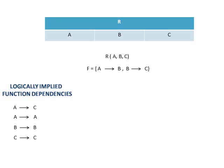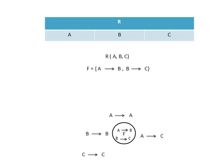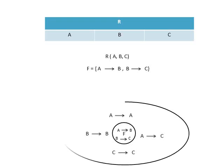This list can get really big if you have 10, 20, or 100 attributes. From a set theory perspective, we have a set F which is a set of dependencies — A determines B and B determines C. Then we have a superset with all the logically implied dependencies, where A determines C, A determines A, B determines B, C determines C — which we are going to refer to as F closure. F closure is a set of functional dependencies logically implied by F.